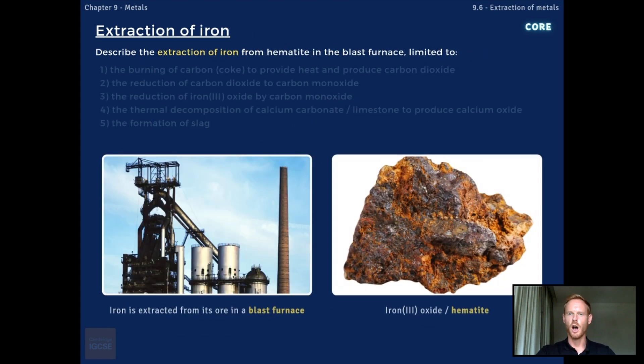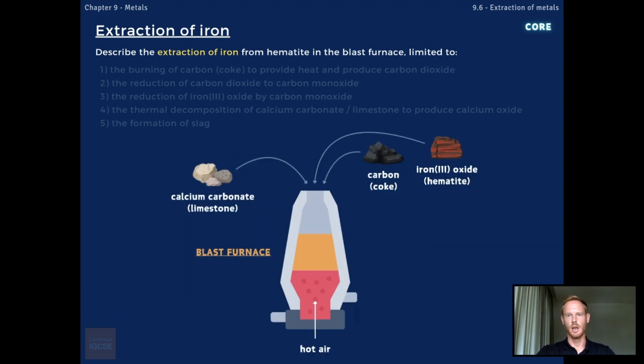You need to describe how iron is extracted from its ore. So iron is extracted from iron-3 oxide, also known as hematite, in a tall chimney-like structure called a blast furnace. The hematite, as well as limestone and a carbon-rich fuel called coke, are fed into the top of the furnace and a blast of hot air enters near the bottom. A series of reactions take place inside the furnace, resulting in the formation of a waste product called slag and molten iron metal, which is siphoned off at the base.